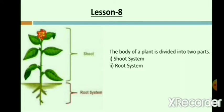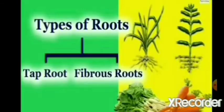Root system. The part of the plant that is under the ground is called the root system. The root system is responsible for absorbing water and minerals from the soil. Roots are mainly of two types: tap root and fibrous root.